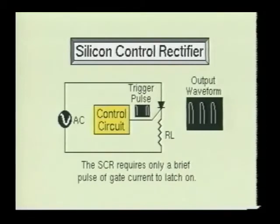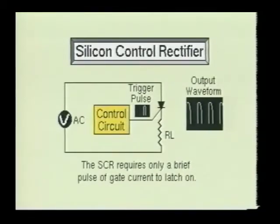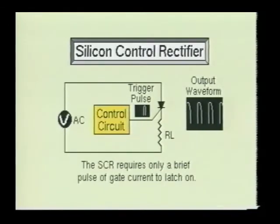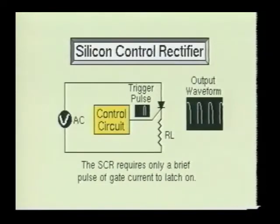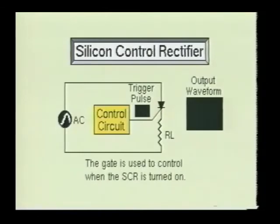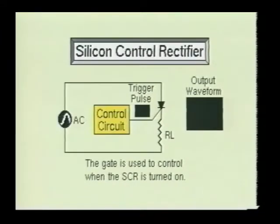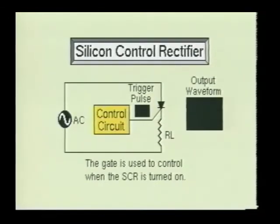Like the diode, the SCR can conduct current in only one direction. The ability of the SCR to remain on even after the triggering signal has been removed is referred to as latching. The SCR requires only a brief pulse of gate current to turn the device on. Once on, the gate has no further control. However, the gate can be used to keep the SCR from turning on, or it can be used to turn the SCR on at any point in the forward half-cycle of a sinusoidal input, making the SCR very useful in controlling many AC-powered devices.